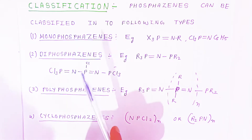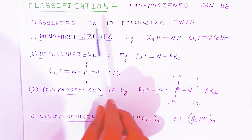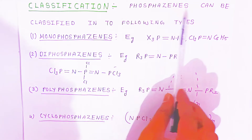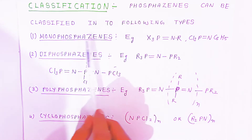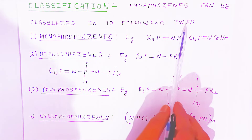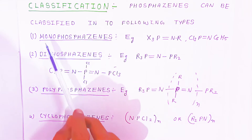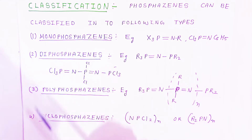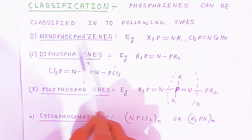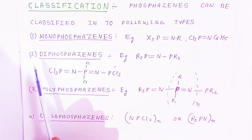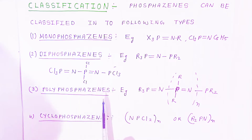Now we are going to classify the Phosphazenes. Phosphazenes can be classified into four types: Monophosphazenes, Diphosphazenes, Polyphosphazenes, and Cyclophosphazenes.